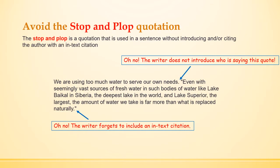The first thing Bruce Bellinger talks about when he discusses using quotations is how to avoid the stop and plop quotation. This is one of the most common problems that new writers face. Basically, the stop and plop is a quotation used in a sentence without introducing or citing the author with an in-text citation. That's a problem because it's choppy — it's hard for readers to go from a sentence you wrote directly into a sentence another person wrote.